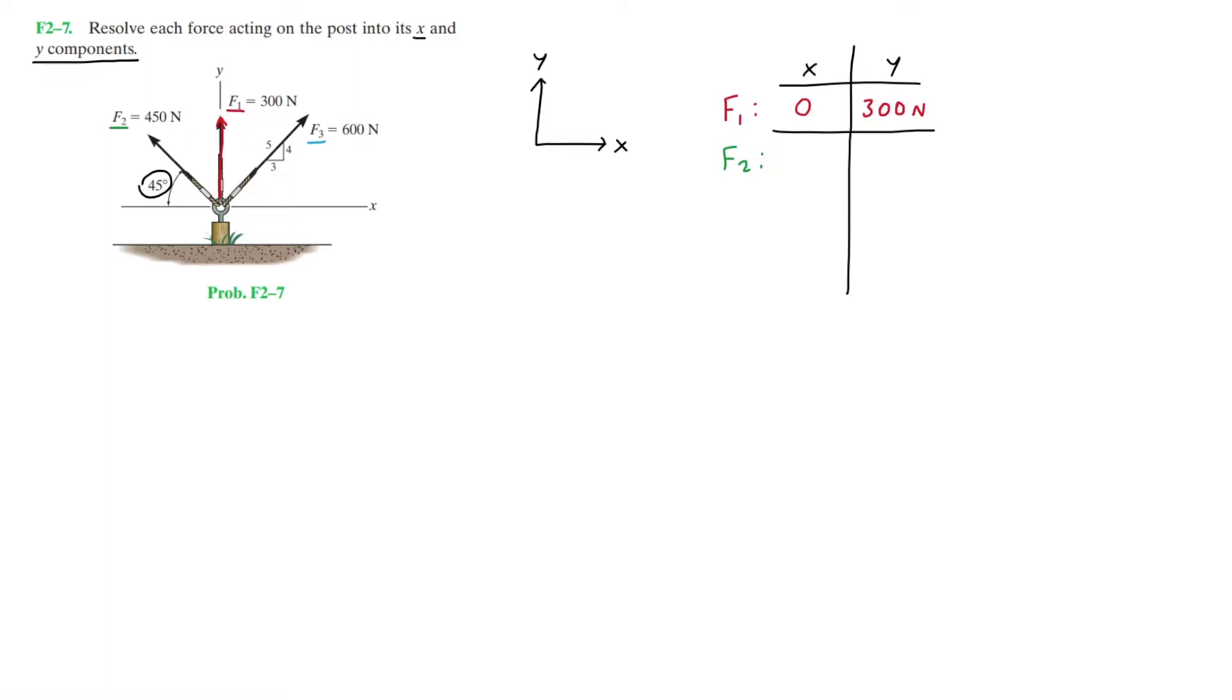Since we're given this specific direction for the force, we're going to need to redraw the force and the direction. Since we're trying to find the X and Y components of this force, I'm going to draw a triangle just like so. This is the 450 Newtons and the 45 degrees between the force and the X axis. This is simply a right triangle.